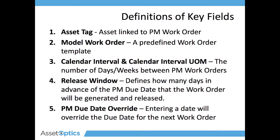An asset tag is a physical or logical asset that you set up in the system. A model work order is a predefined work order template. We will discuss that in a little bit more detail.